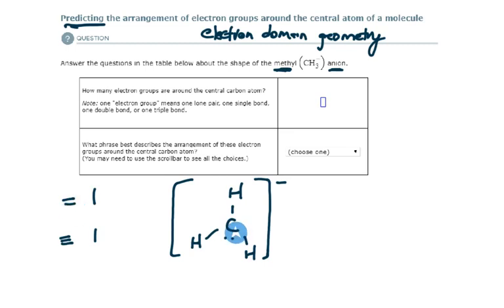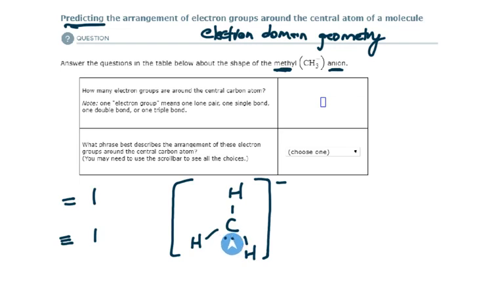So just that cluster of electrons counts as one electron group. Around the central carbon atom, I have one, two, three, and this lone pair here is four. So I have four electron groups around the central carbon atom.